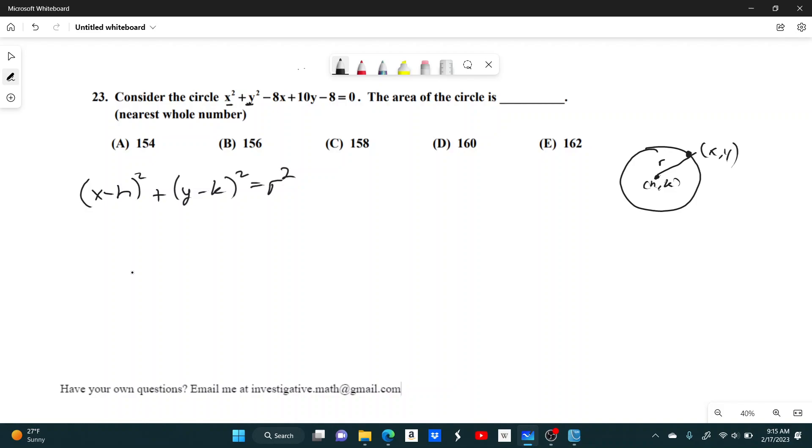So pretty much we have to take this equation and get it into this form so we can figure out what r squared is. And then the area of a circle is just pi r squared. So just take r squared multiplied by pi.